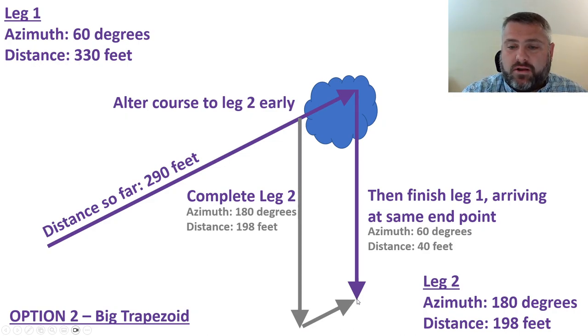You can see why this should work. You should end up at that exact same end point. That'll make a really big trapezoid rather than just cutting the corner to avoid this obstacle. Either way should end you up at the same end point. That's a couple approaches to avoid obstacles at compass and pacing.